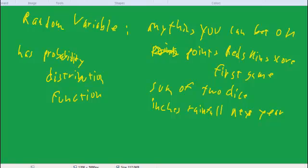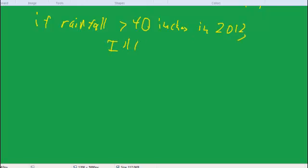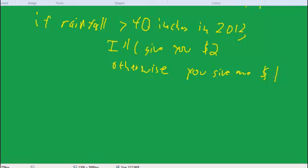Suppose I offered you the following bet. I said if the rainfall in the Washington, D.C. area is greater than 40 inches in 2012, I'll give you $2. Otherwise, if it's less than or equal to 40 inches, you give me $1. Is that a good bet to make?